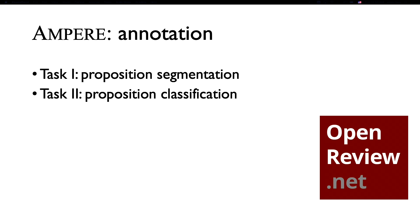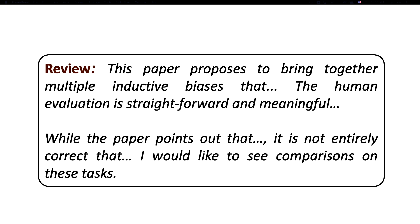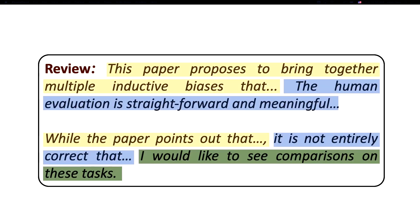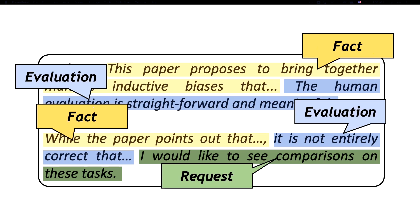The annotation task is structured into two subtasks. We first ask the annotators to segment reviews into some propositions, each of which is then labeled with one of the aforementioned argumentative types, or as non-arg if it is not argumentative. A sample review is shown here. The annotators will first segment them into propositions. Notice that one sentence can be broken down into multiple propositions, and based on which the annotator will assign a label for each of the propositions.